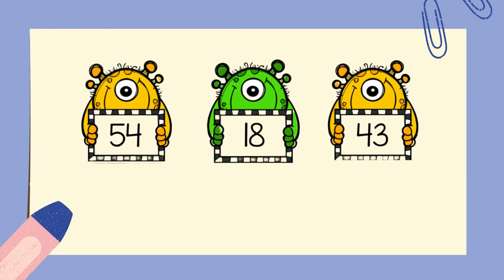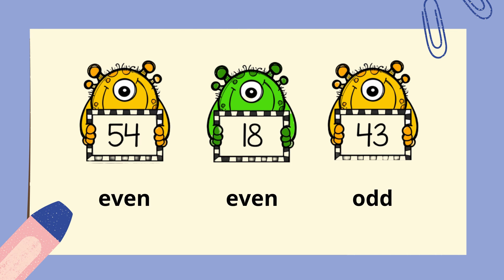Here's the second set of numbers: fifty-four, eighteen, and forty-three. Let's see if you'll get it right. Are you done? Okay, let's check. Fifty-four is an even number. Eighteen is also an even number. And forty-three is an odd number. Well done!